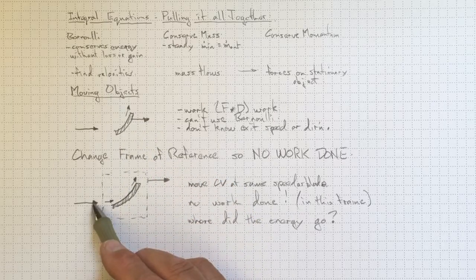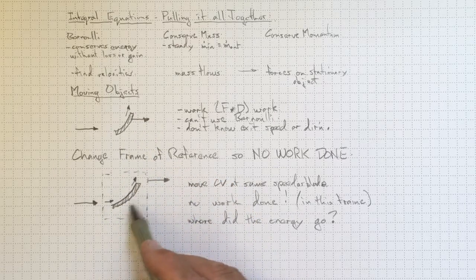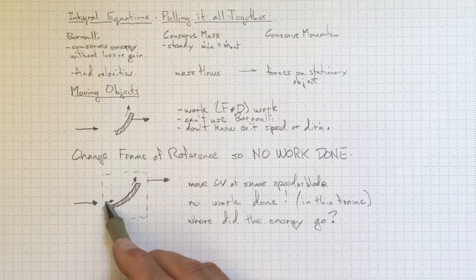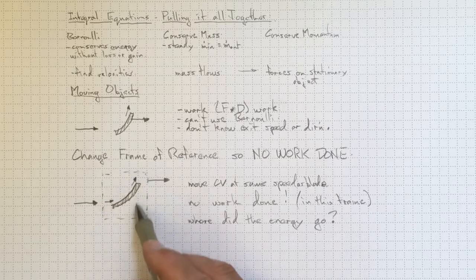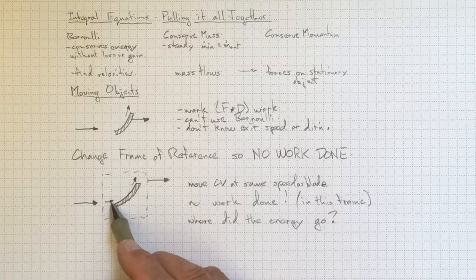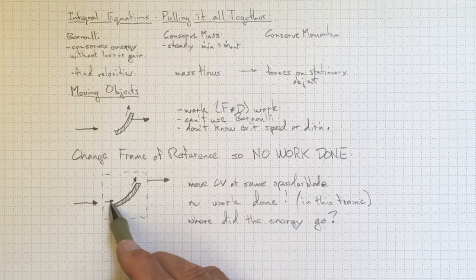We go from this kinetic energy and because the control volume is moving, the velocity relative to the control volume is lower. So in this frame of reference, the jet actually had less energy to start with.